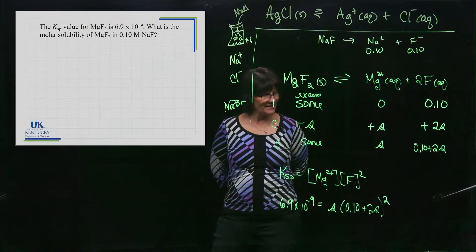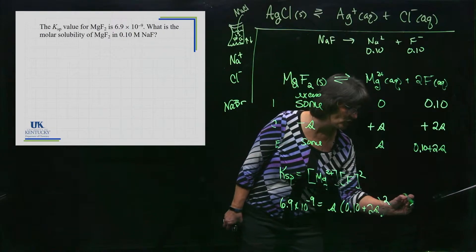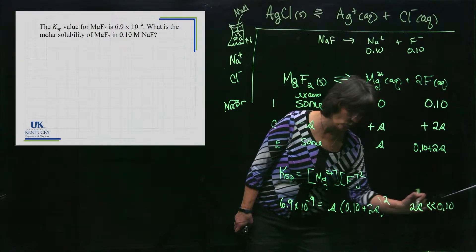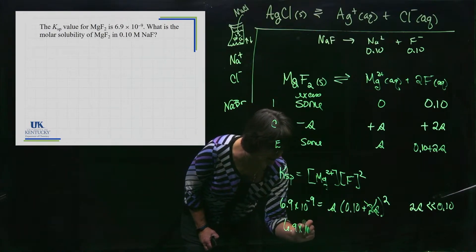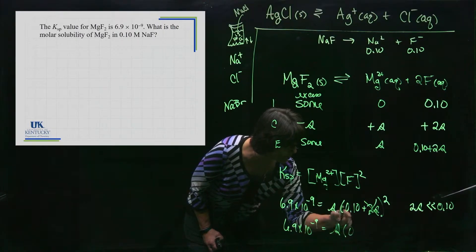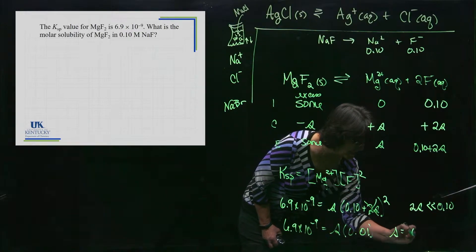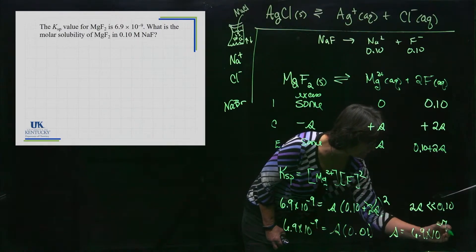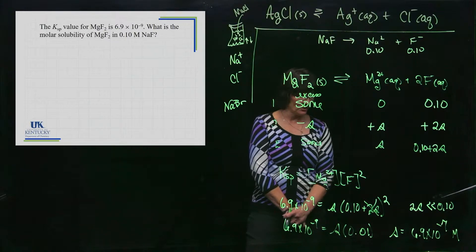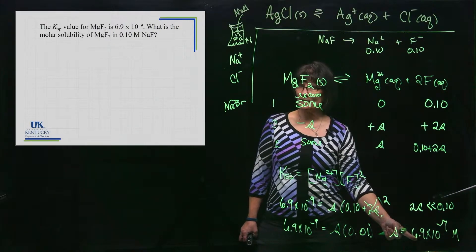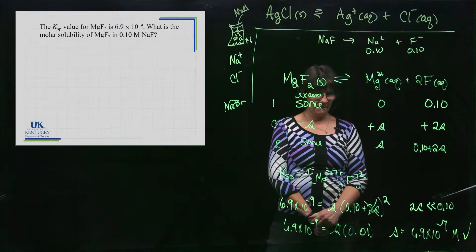We can make an assumption. Without the assumption we'd have a cubic term. The assumption is that 2s is much much less than 0.1, so we can ignore that term. Then it's just: 6.9×10⁻⁹ = s × (0.1)² = s × 0.01. So s = 6.9×10⁻⁷. Let's check our assumption — even if we double 6.9×10⁻⁷ it's still way less than 0.10, so that was a good assumption. That is the solubility of magnesium fluoride in 0.1 M sodium fluoride.